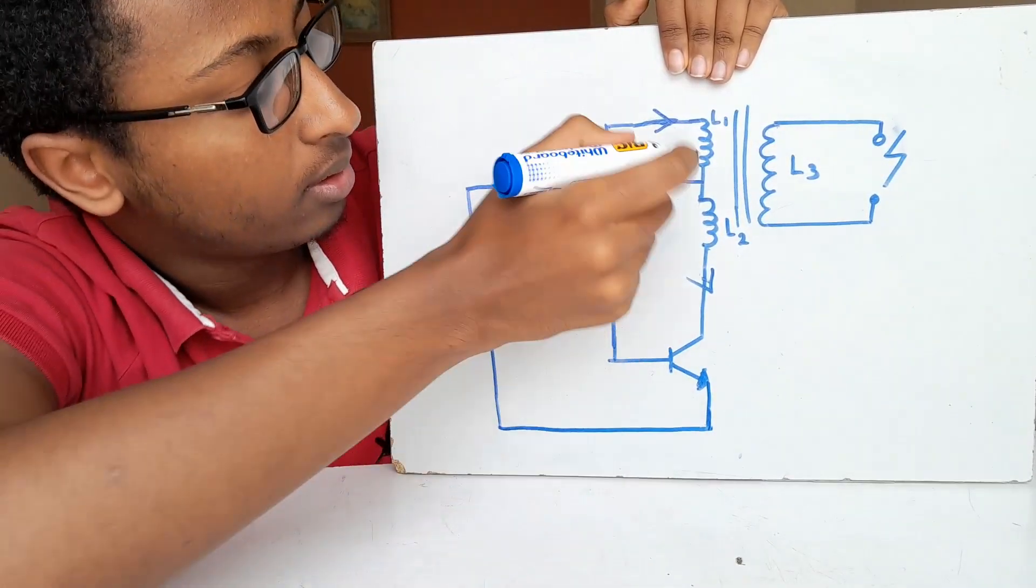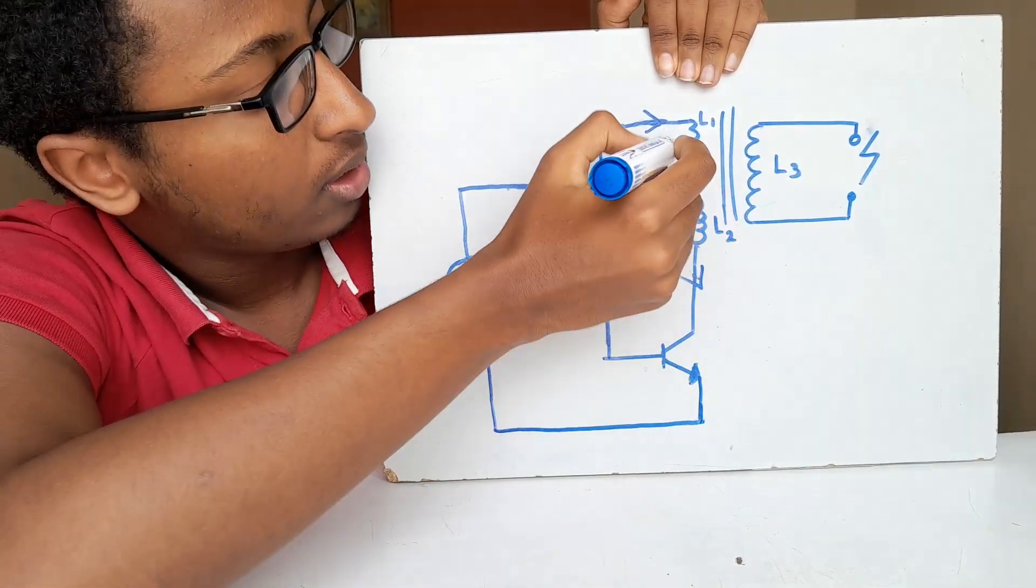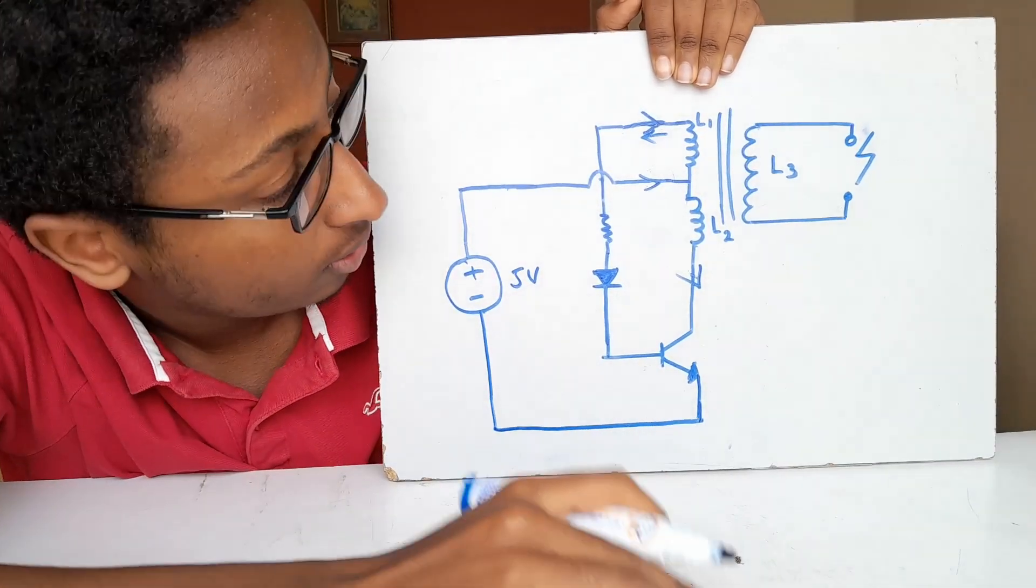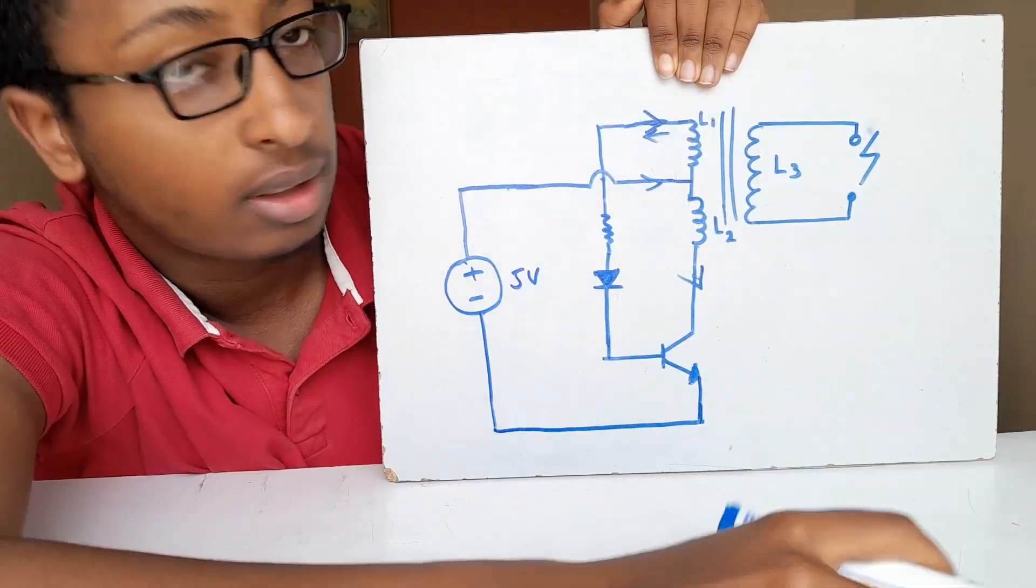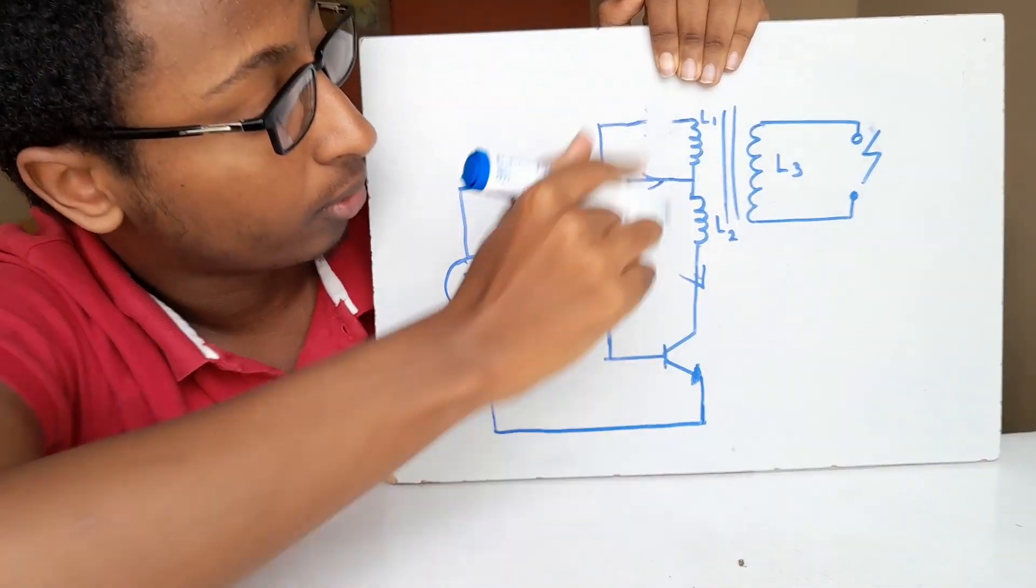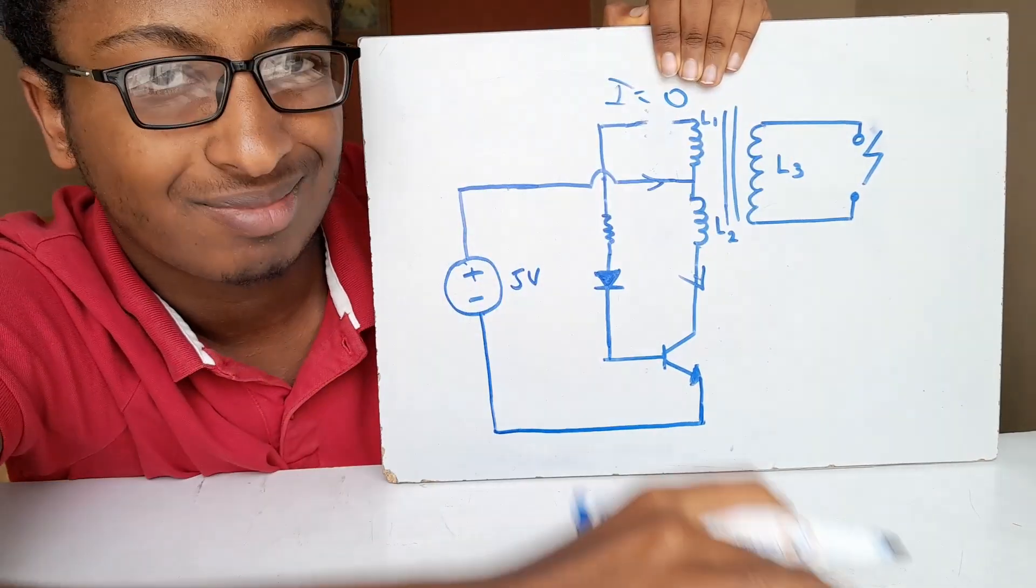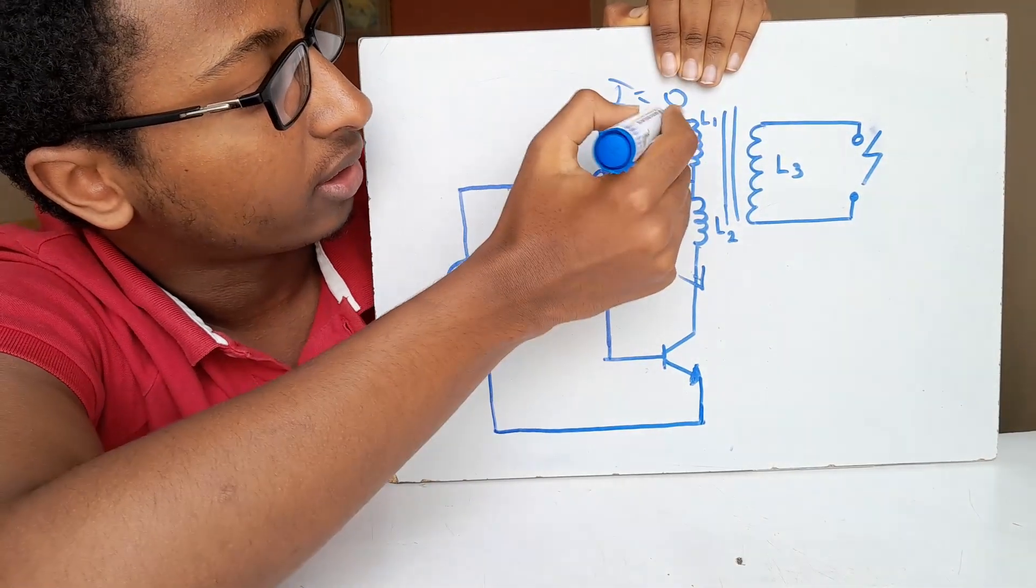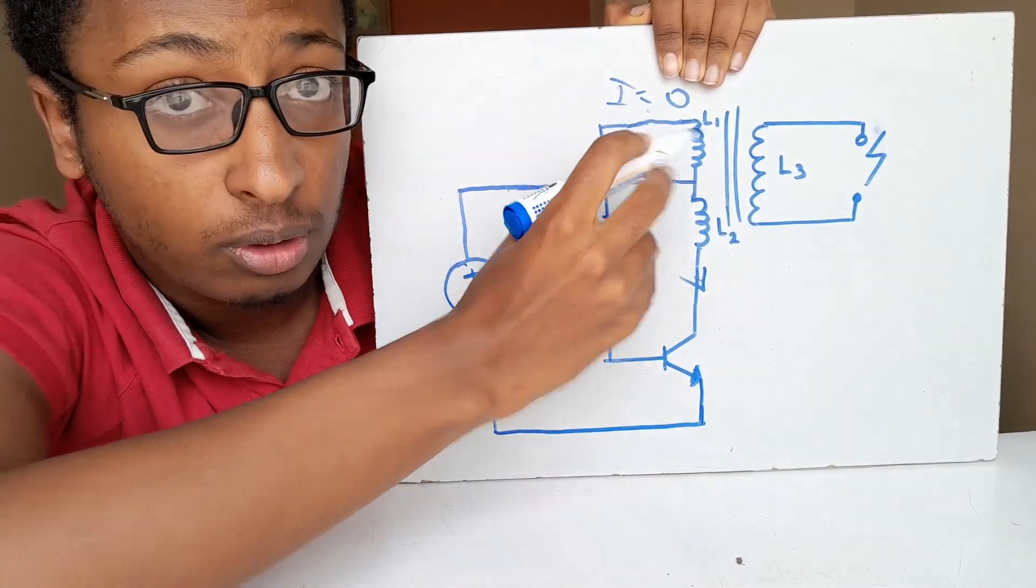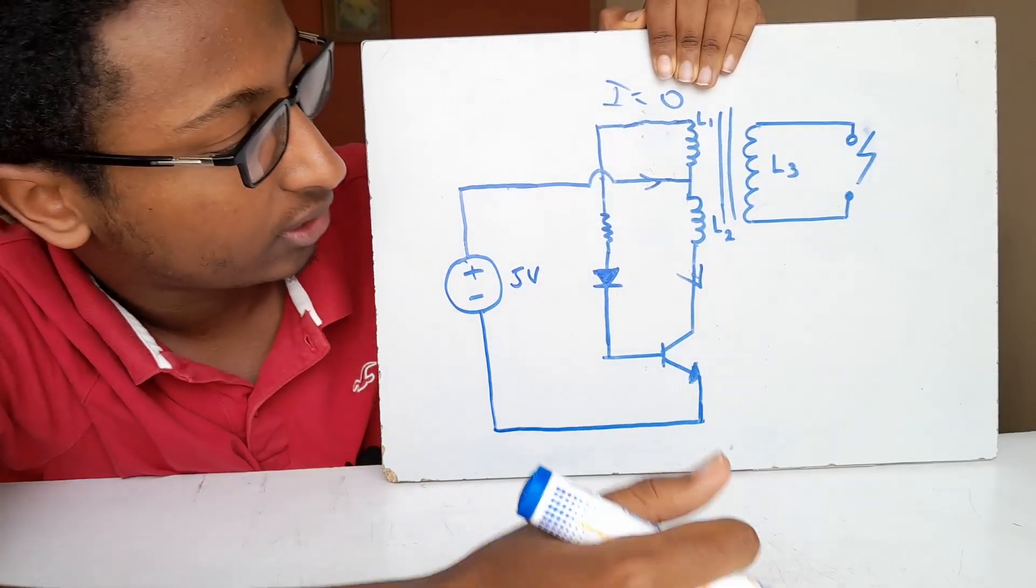This is exactly what happens. So when L2 causes L1 to produce its own current or voltage, the voltage starts to resist the incoming current from the original source. So this current eventually cancels out, creating no current flowing inside L1, which means I goes to zero. There is no current inside this circuit.